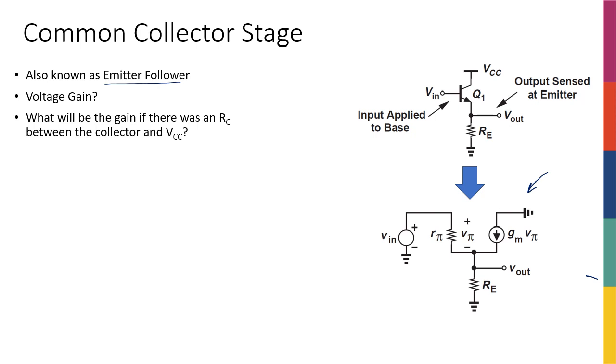But before that, needless to say, Vout is actually connected to emitter, Vin is connected to base, and because it's common collector, collector is the one that is not connected to input or output.